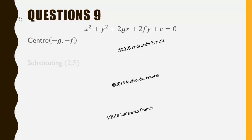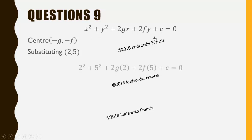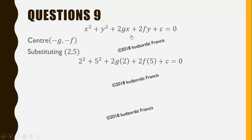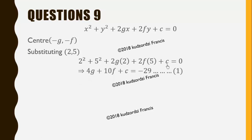This point lies on the circle so it must satisfy the equation of the circle. We substitute (2, 5) into this, so that gives us 2 squared plus 5 squared plus 2g times 2 plus 2f times 5 plus c equals zero. When we simplify this we get the equation 4g plus 10f plus c equals negative 29. Let us call this equation 1.